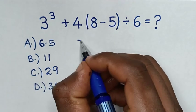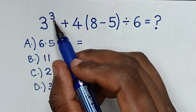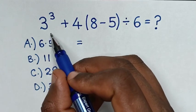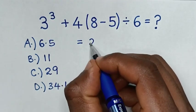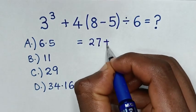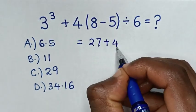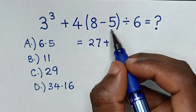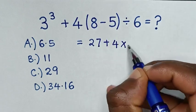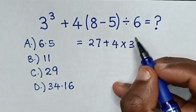So it will be equal to: 3 power 3 is the same as 3 times 3 times 3, which is 27. Then plus 4. From here, 8 minus 5 is 3, so it will be times 3, then divide by 6.